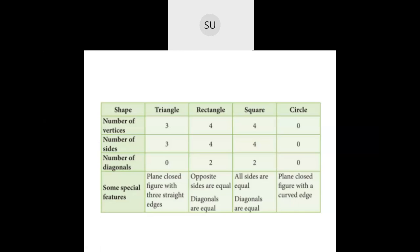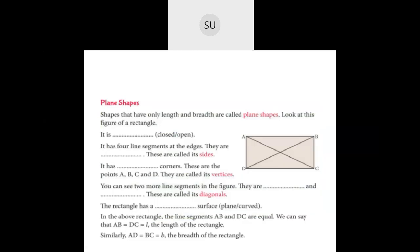Coming to circle: a circle doesn't have any vertices, corners, sides, or diagonals. Some special features of a circle: it is a plain closed figure with a curved edge — it has a curved edge instead of a straight edge. These were the plain shapes.